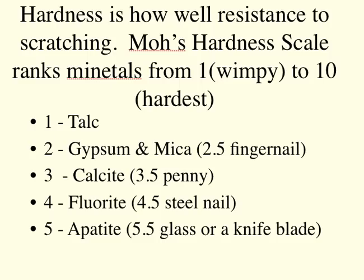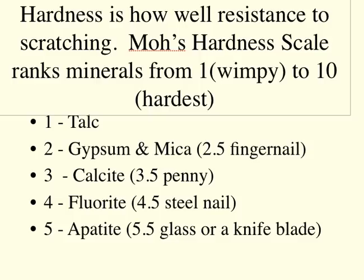Hardness is done on a scale — Mo created the scale, from one, the wimpiest, to ten, the hardest. If a mineral is scratched easily by your fingernail, it's somewhere under a two and a half. One is talc — baby powder — really wimpy. Gypsum and mica are basically a two. Your fingernail is at two and a half, so if your fingernail can scratch something, its Mohs number is less than two and a half. If a penny scratches something, its hardness is less than three and a half, like calcite.